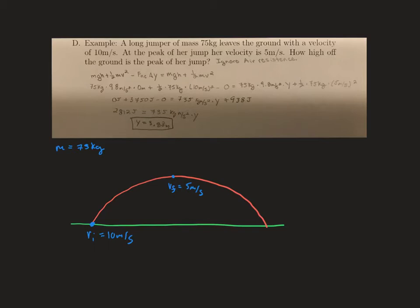So let's keep reading this problem. We want to know how high off the ground the peak of the jump is. So we want to know what y final is when the velocity is 5 meters per second.